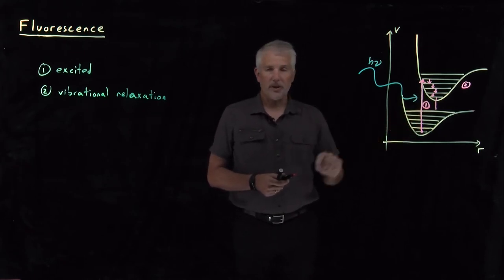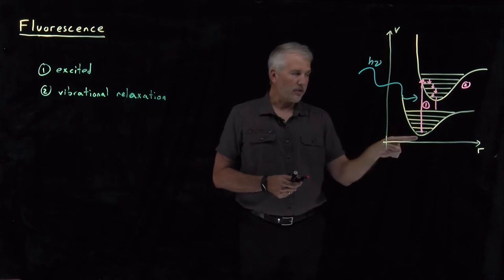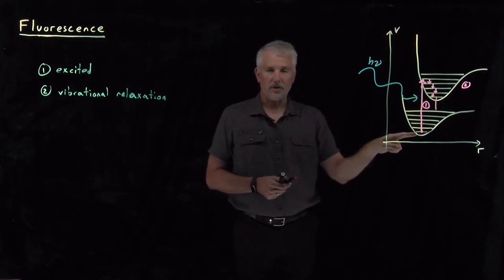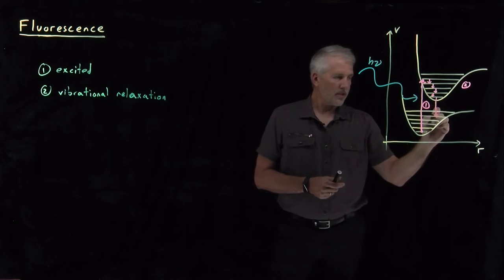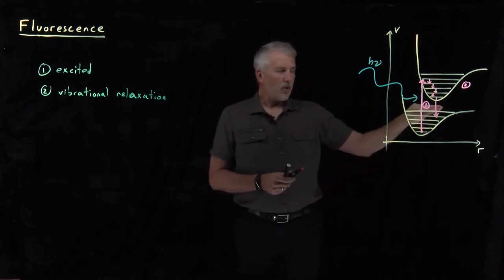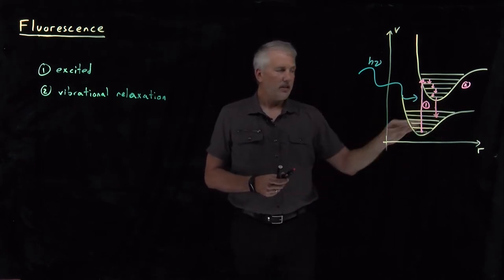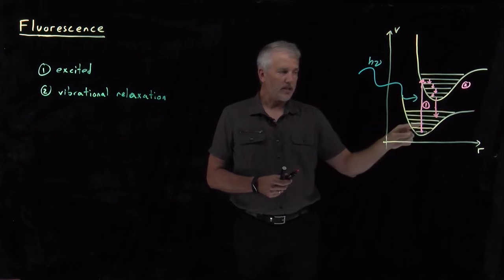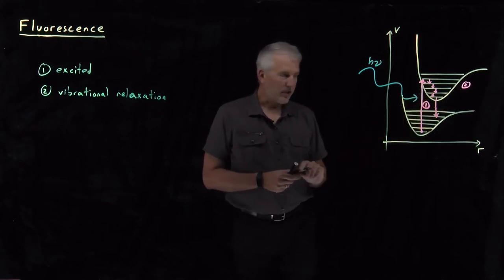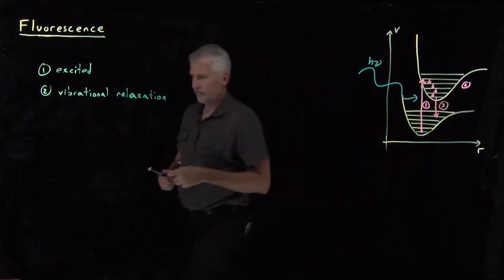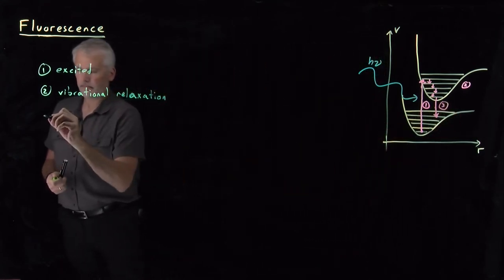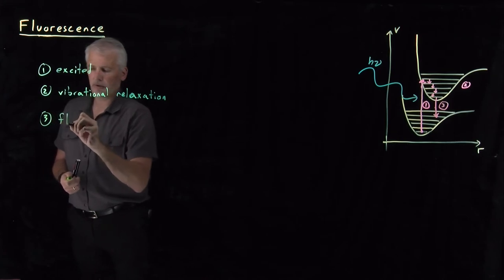And now, remember, that transition has to be vertical. It's not going to land back in the ground vibrational state of the lower electronic state. It might land in this state or this state. It's going to land in one of these vibrationally excited states of the ground electronic state because it has to make this vertical transition. So that step number three is the step we refer to as fluorescence.